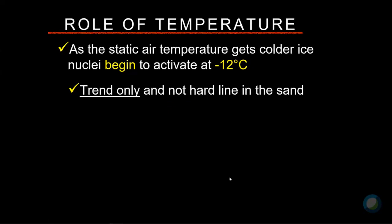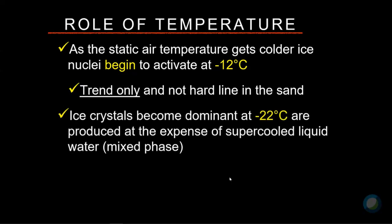As the air temperature gets colder, around minus 12 or so, we start to activate those ice nuclei, and we trend toward less and less supercooled liquid water in the clouds. Around minus 22, ice crystals become more dominant than supercooled liquid water. As you develop ice crystals at minus 15 to minus 18 degrees Celsius and colder, the atmosphere builds bigger ice crystals and evaporates some of those supercooled liquid water drops, resulting in a mixed-phase cloud.